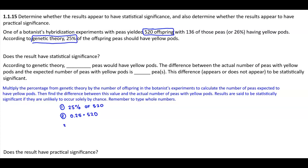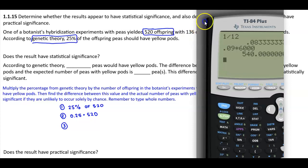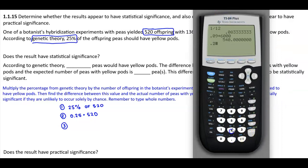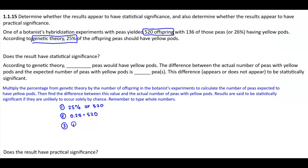So now, let's go ahead and multiply that. If we use our calculator in this sense, I'm going to go ahead and open that up. So if we take 0.25 and then multiply that by 520, the answer is 130.